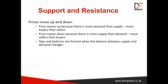Support and resistance is quite simply the idea that prices move up and down, and that is all about supply and demand — the number of buyers versus the number of sellers. The market is purely an auction process. The more demand there is, or the less supply, the higher a price goes. Prices move down because there is more supply than demand, more sellers than buyers, and the price needs to lower in order to find and attract buyers.